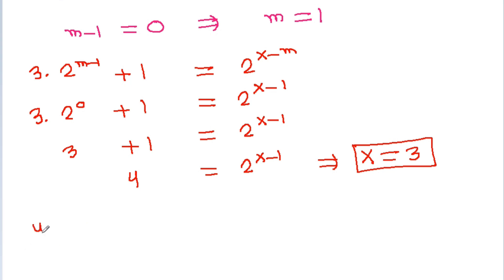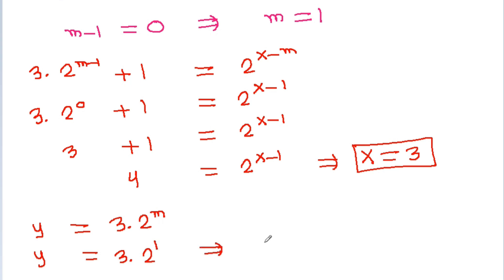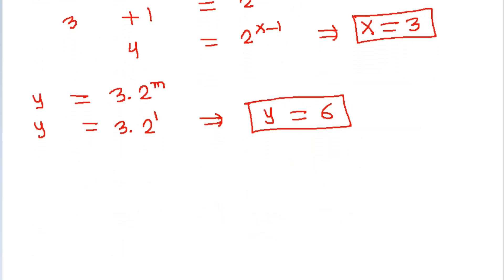With m = 1, y = 3 times 2^m = 3 times 2 = 6. Hence the solution for Case 1 is (x, y) = (3, 6).